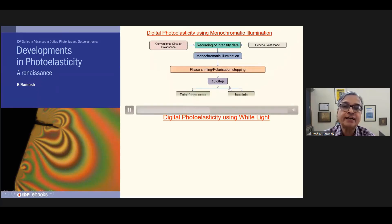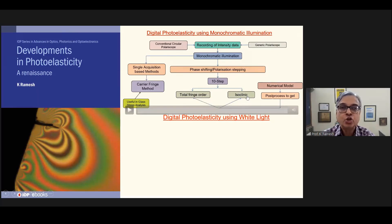This book recommends a 10-step method to evaluate the total fringe order and isoclinics. Usually, researchers post-process these in a cumbersome manner for comparison with the numerical model. This book advocates a simpler approach by post-processing the results of a numerical model to get the total fringe order and isoclinics.